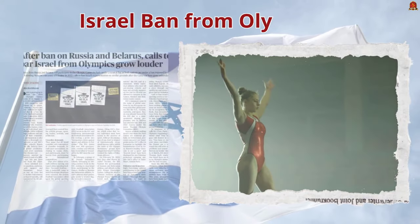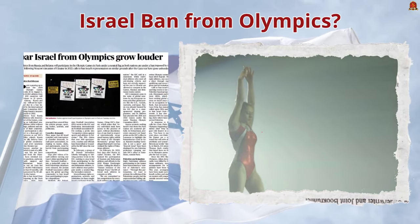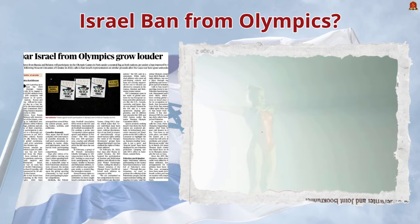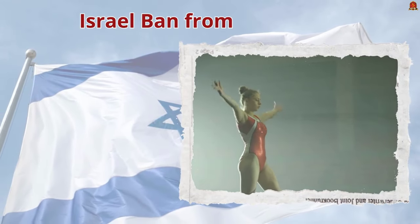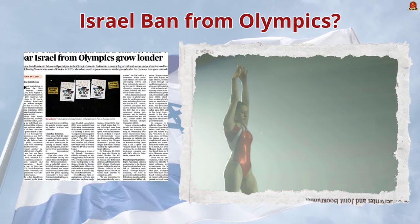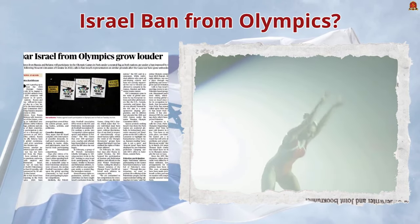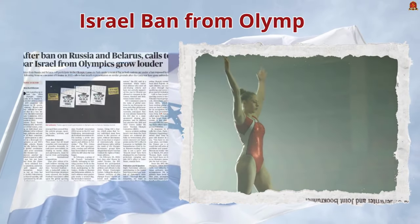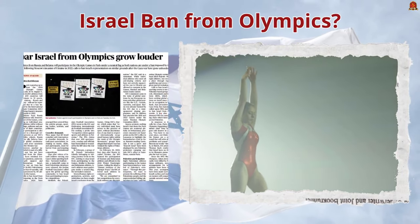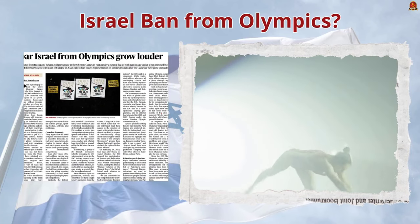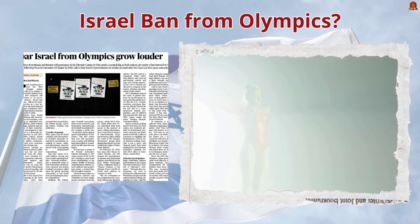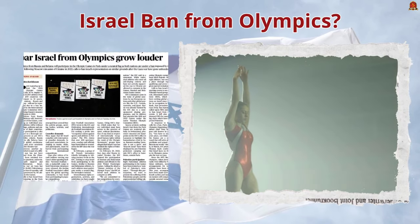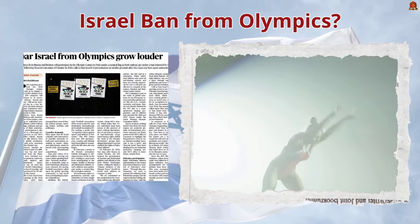Our next topic is about Olympics 2024. Aspirants might think questions from sports section might not appear in UPSC Prelims, but to our surprise, questions from cricket, golf, tennis, and boxing have been asked in UPSC Prelims 2022. With the ongoing war between Russia and Ukraine, sportspersons from Russia and Belarus were banned from representing their respective countries in Paris 2024 Olympic Games and are playing only as neutral individuals. Similarly, banning Israel is being suggested by various stakeholders across the world.